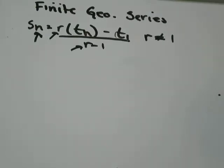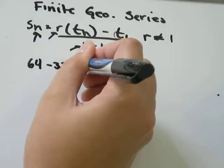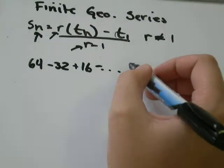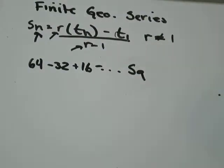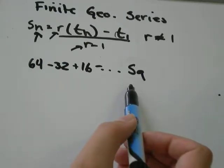So we're going to look at a series. We've got 64 minus 32 plus 16 minus etc. And we're going to find the sum of the first 9 terms. So it's an infinite series, but we're only looking at the first 9 terms, so just a chunk of the series.